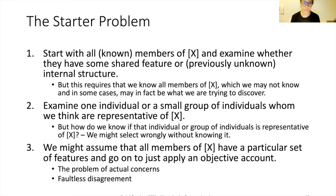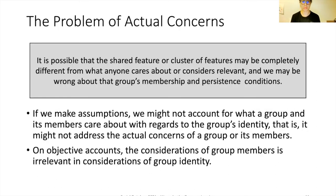The two separate problems that arise are what I call the problem of actual concerns and the problem of faultless disagreement. According to the problem of actual concerns, the shared feature or cluster of features we identify may be completely different from what anyone cares about or considers relevant, so we may be wrong about the group's membership and persistence conditions. If we make assumptions in examining a group, we might not account for what the group and its members actually care about with regard to the group's identity.